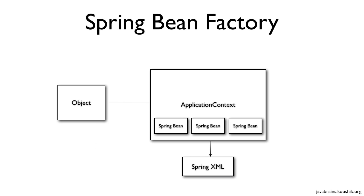After that, when another object does a getBean(), the application context hands over the bean that has already been initialized. So the creation of beans happens when the application context is being initialized, not when getBean() is called. This is the default behavior. We can configure a bean to be initialized only when a getBean() happens, but unless you do that configuration, the default is that all beans are created at context initialization.